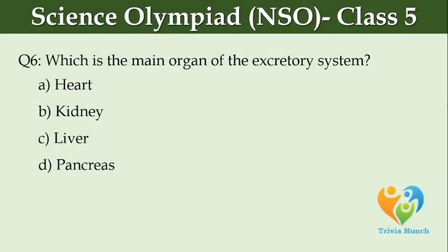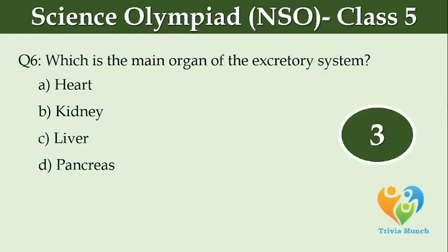Which is the main organ of the excretory system? Option A, heart. Option B, kidney. Option C, liver. Option D, pancreas.